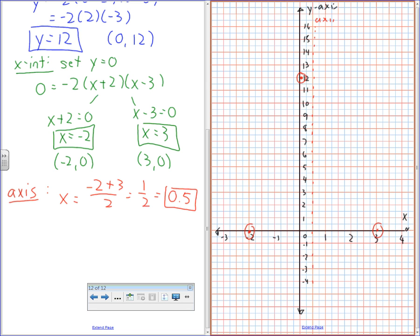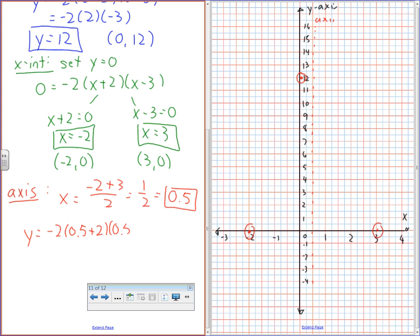And then to get my y, it's going to be y equals negative 2, 0.5 plus 2 times 0.5 minus 3, which is negative 2 times 2.5 times negative 2.5, which is 12.5. Is that right? Therefore, my vertex is 0.5 and 12.5.